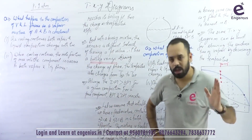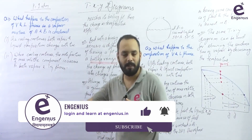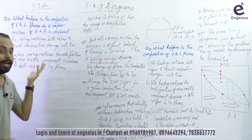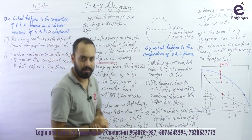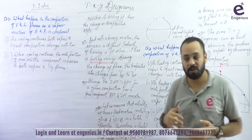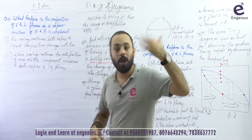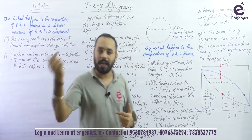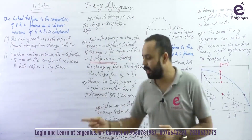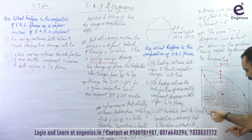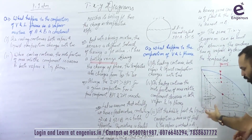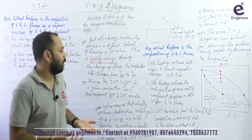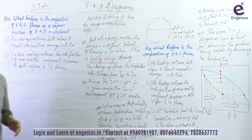Whatever happens with A during boiling and heating, the same thing happens with B during condensation. During heating, the mole fraction of A decreases in both vapor and liquid phases. During condensation, the mole fraction of B decreases in both vapor and liquid phases. This axis represents the mole fraction of A, so if the mole fraction of A is increasing, it means the mole fraction of B is decreasing — you can view the same thing with respect to the mole fraction of B.